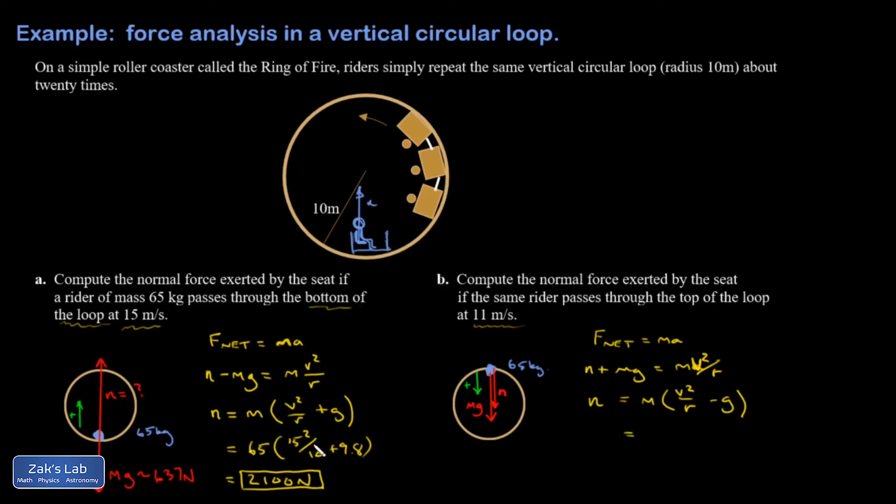So I can see immediately, when I compare to what I got before, that this is going to be smaller. 65, they're only moving 11 meters per second now. R is 10. So I get 11 squared, divided by 10, minus 9.8, all multiplied by 65. And I get a tiny normal force of 150 newtons.